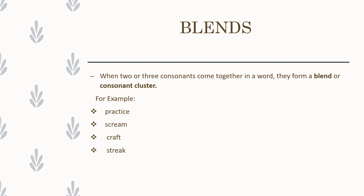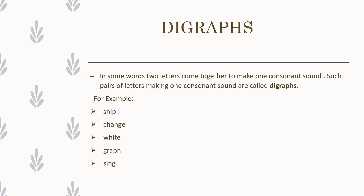The commonly used word for these types of combinations is 'blends.' But in some words, two letters come together to make just one consonant sound. In blends like SCR and STR you can hear distinct sounds, but in other words two letters come together and make only one consonant sound. Such pairs of letters making one consonant sound are called digraphs. Let us take some examples.